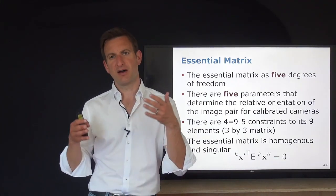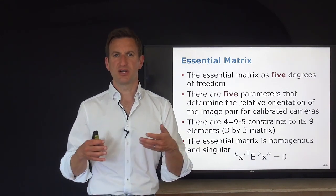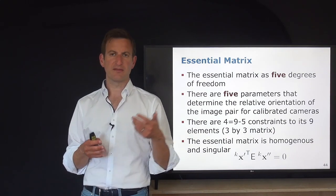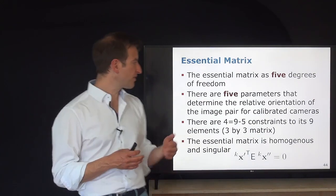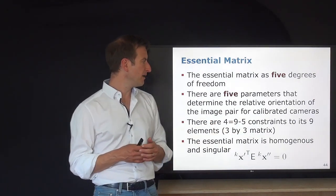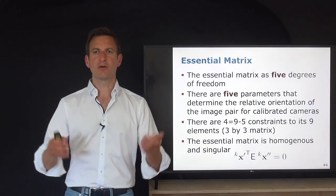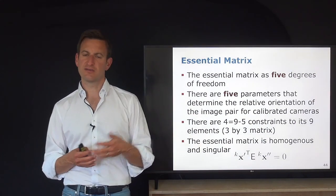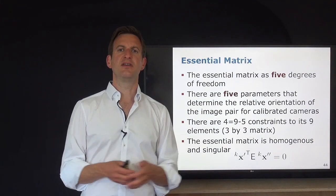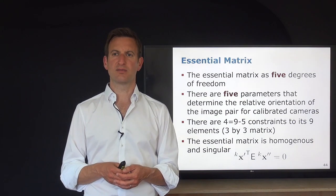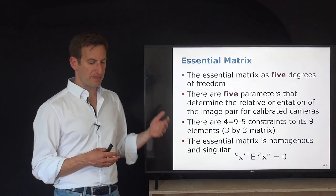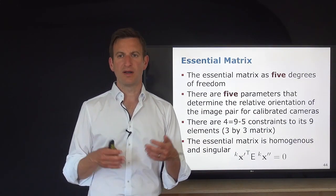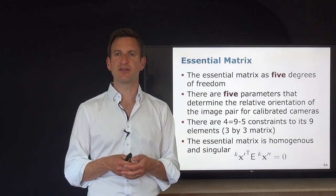The essential matrix encodes only five degrees of freedom — the five parameters estimable from relative camera motion without scene knowledge. It is a 3×3 matrix with nine elements, but five parameters are free, giving four constraints. One constraint comes from it being a homogeneous matrix; others relate to constraints on its singular values. The essential matrix for the calibrated camera plays the same role as the fundamental matrix for the uncalibrated camera.